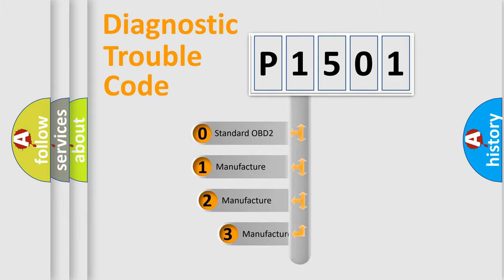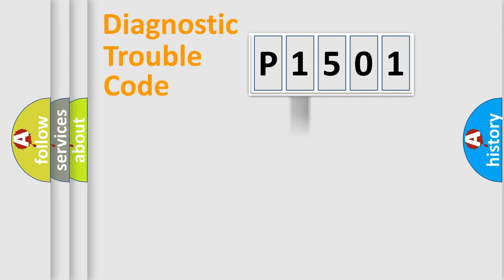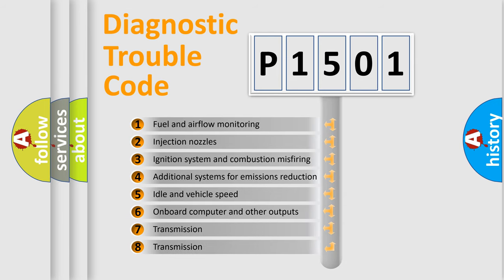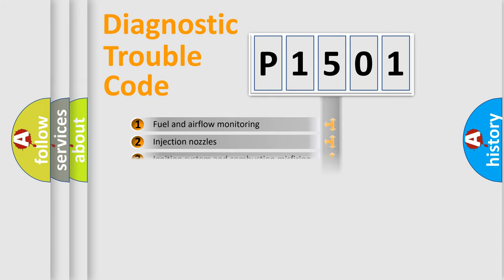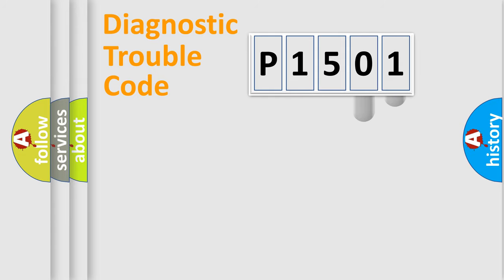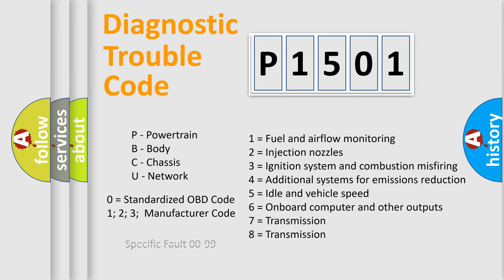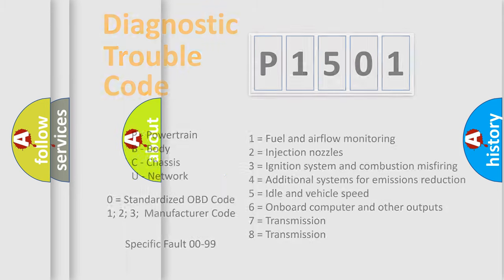If the second character is expressed as zero, it is a standardized error. In the case of numbers 1, 2, or 3, it is a more specific expression of a car-specific error. The third character specifies a subset of errors. This distribution is valid only for the standardized DTC code, and only the last two characters define the specific fault of the group. Such a division is valid only if the second character code is expressed by the number zero.